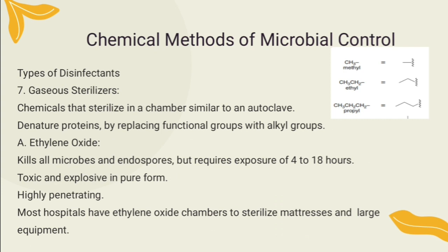Sterilization can be achieved with ethylene oxide (ETO). This chemical denatures proteins and destroys all microorganisms, including bacterial endospores. It is used at a warm temperature in an ethylene oxide chamber. Several hours are needed for exposure and flushing out the gas, which can be toxic to humans. Ethylene oxide is widely used for plastic instruments such as petri dishes, syringes, and artificial heart valves. It is a highly penetrating gas.